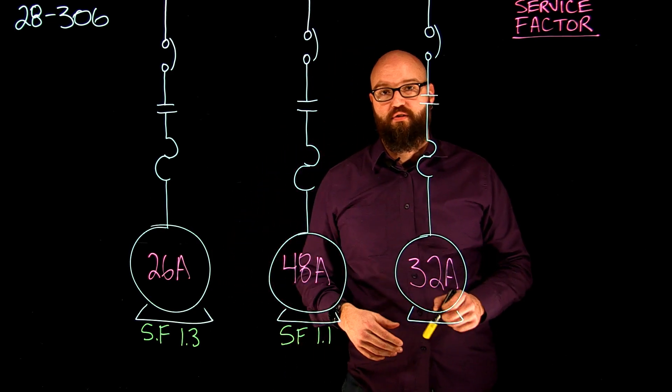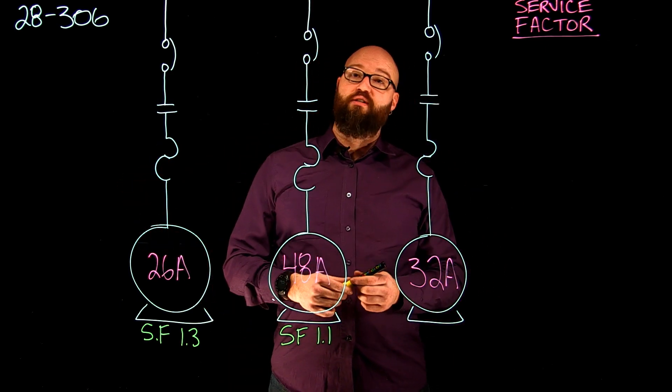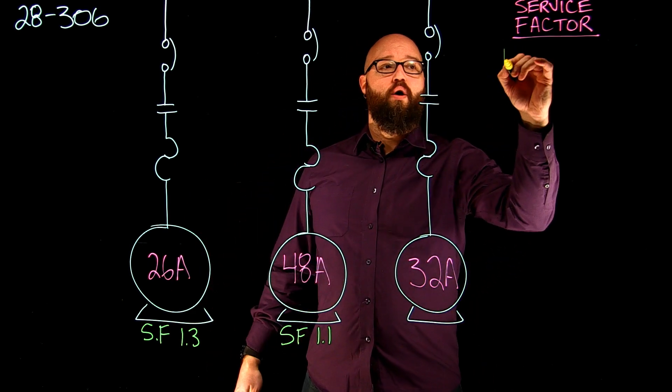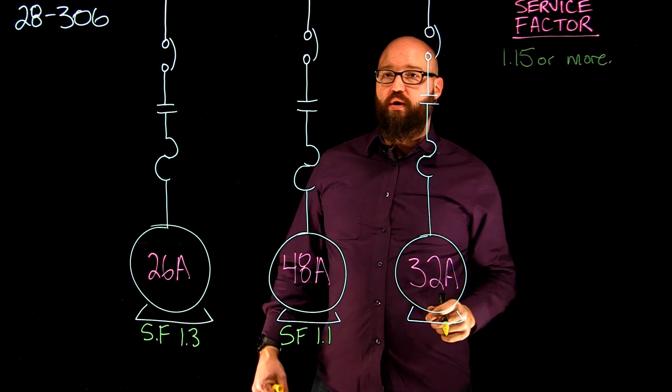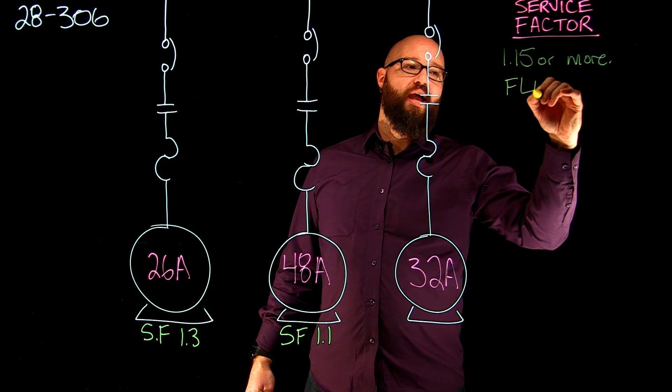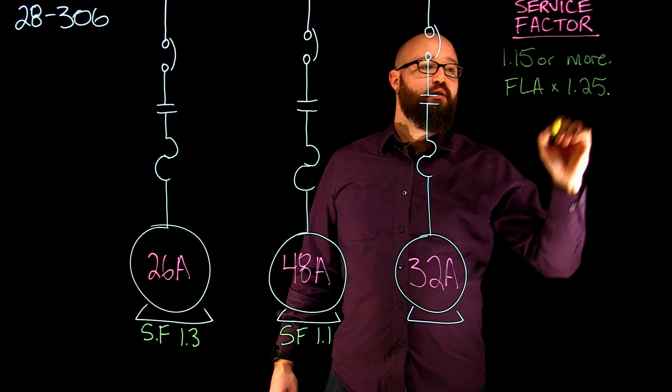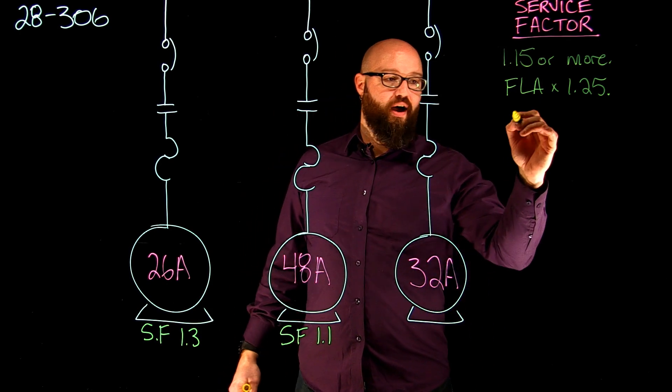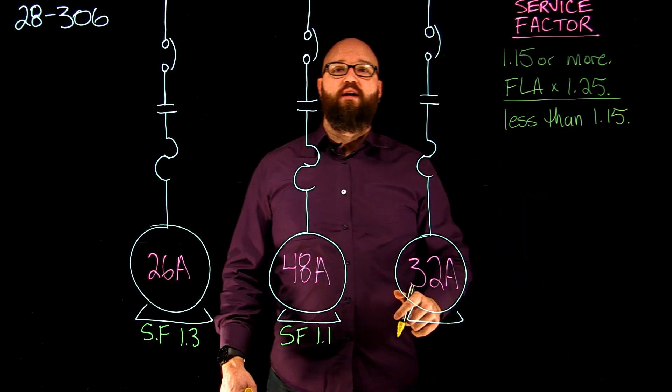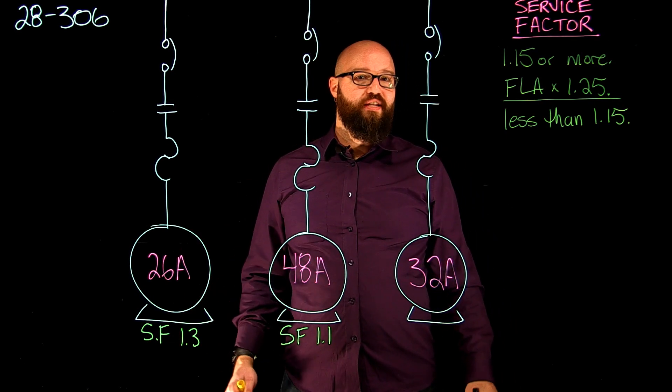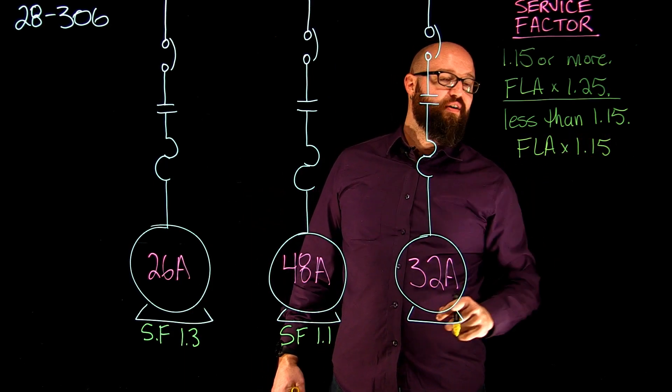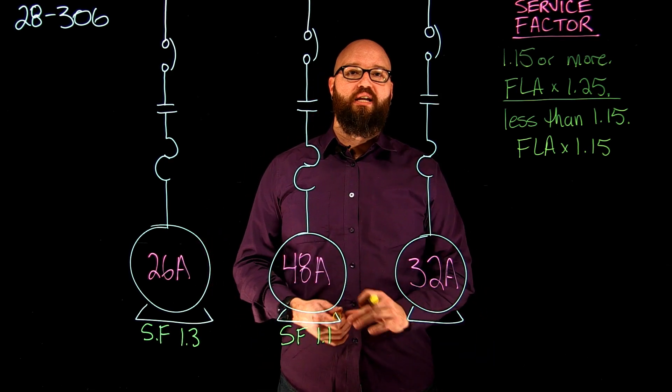If we take a look at 28306 in the 2015 Canadian Electrical Code, it tells us for marked service factors of 1.15 or more, we're going to multiply the FLA, or the full load current rating of the motor, by 125% or FLA times 1.25. If we have less than 1.15, we're going to take our FLA and multiply that by 115% or 1.15, and that would give us the maximum setting of overload device that I could have connected to that motor.